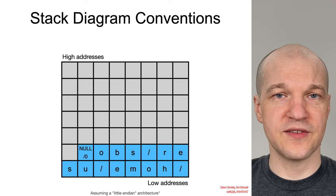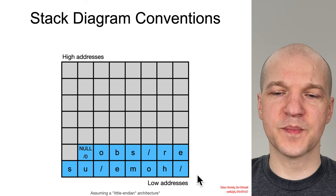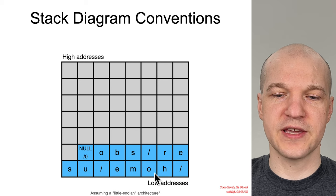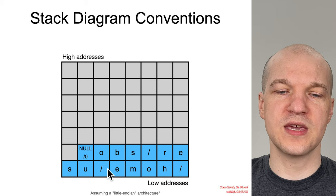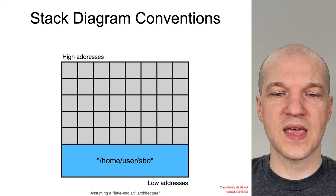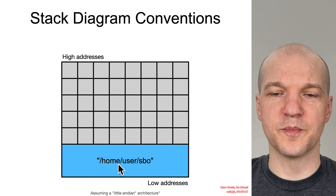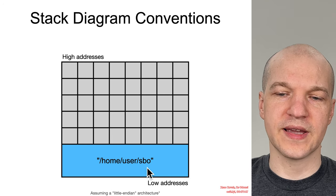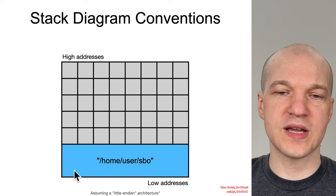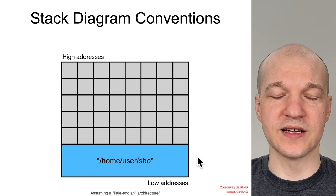On the other hand, if you had something like a string instead of a number, the least significant byte is here — so the string would appear as slash H-O-M-E slash U-S-E-R. For instance, this would be the string /home/user/sbo. Little-endianness means it goes from right to left, bottom to top in stack diagrams.